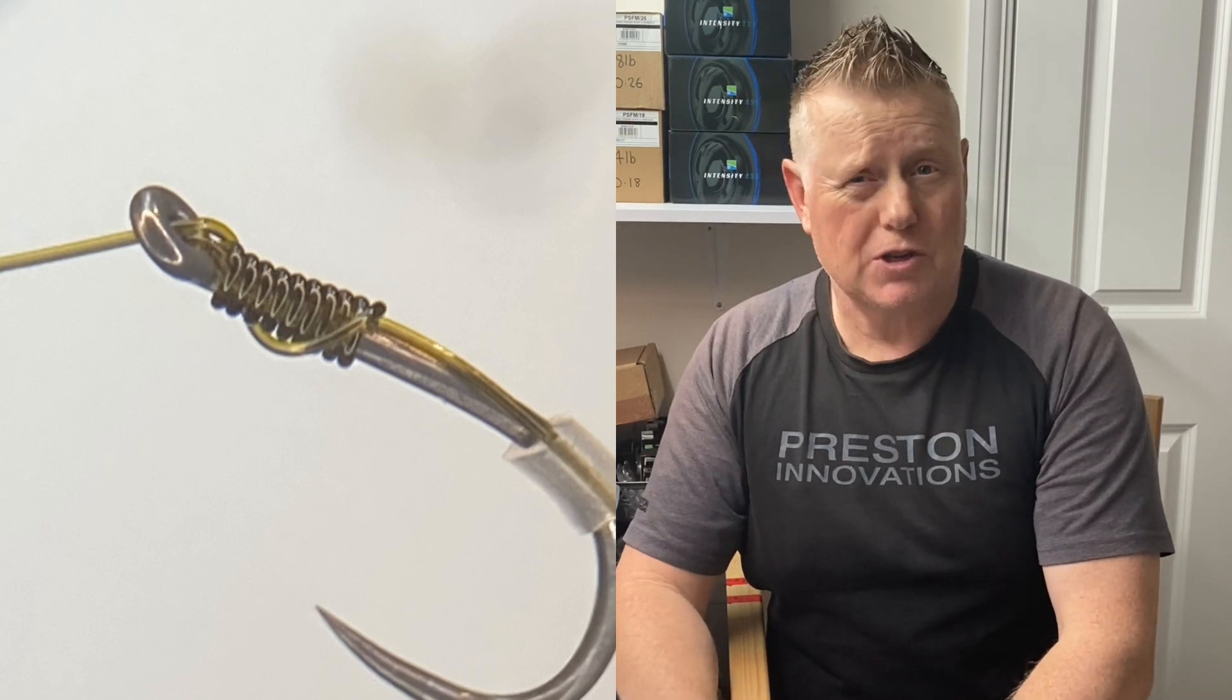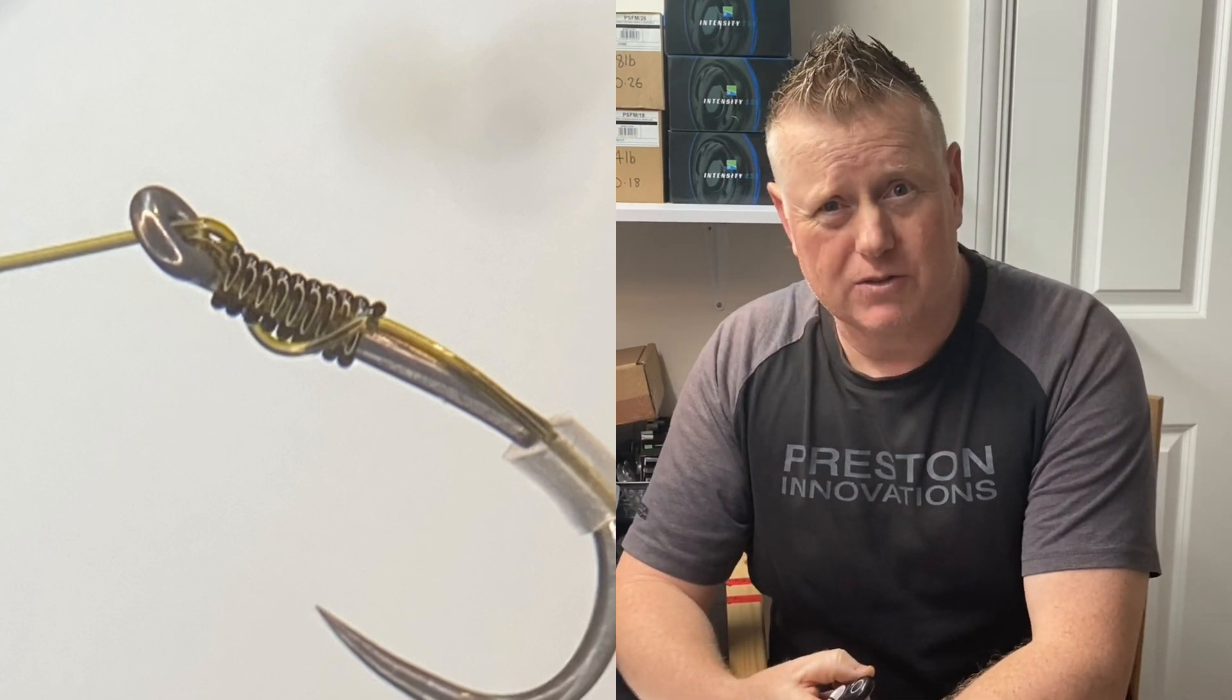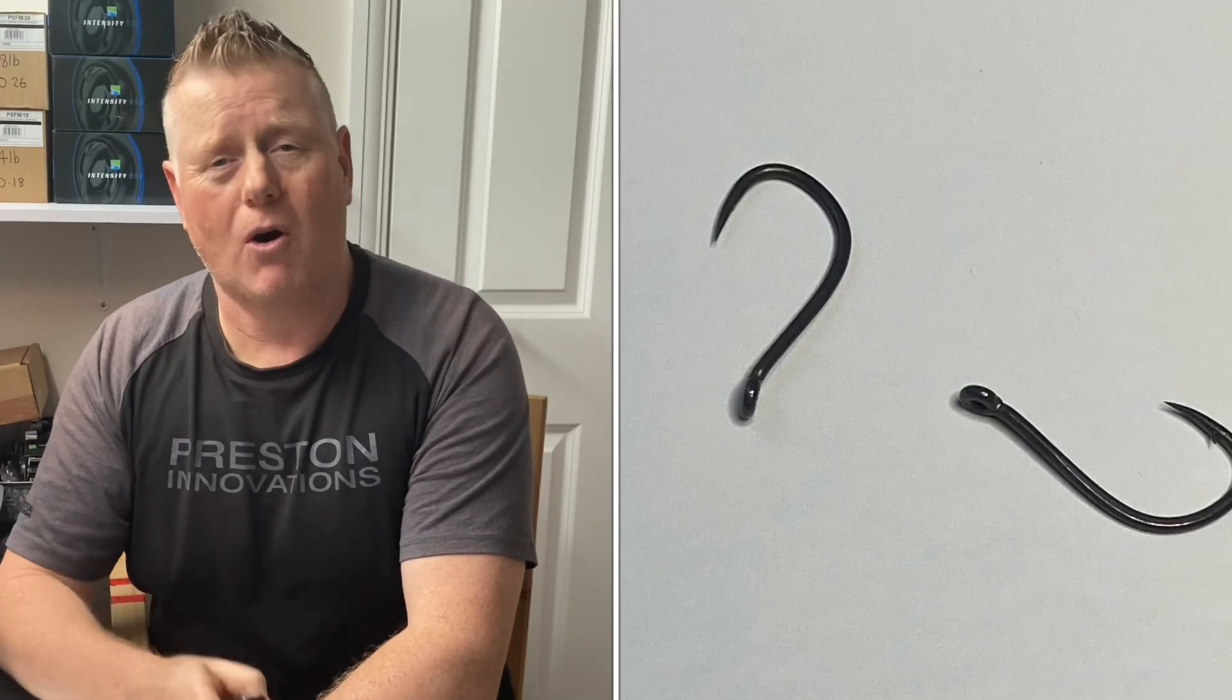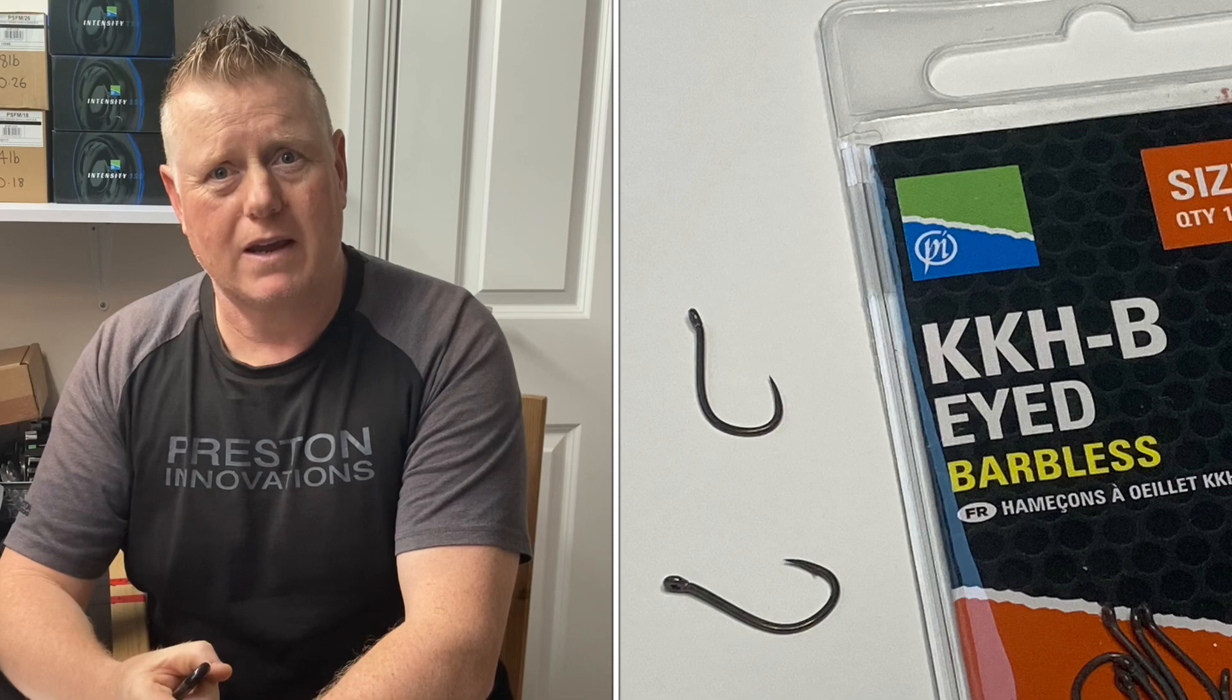Today I'm going to be using the knotless knot. That's derived from the carp anglers from many years ago. The most important thing when you're tying a knotless knot to remember is that they need to have an out-turned eye on the hook just so you can get it to sit nicely and sit straight when you've tied your hook.